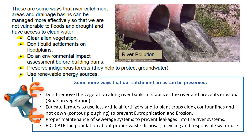Don't remove the vegetation along the edge of rivers. The term for this is riparian vegetation — it refers to the vegetation right on the riverbank, the zone between the water and the land. Educate farmers to use less artificial fertilizers and to plant crops along contour lines rather than down the slope — that's contour ploughing.